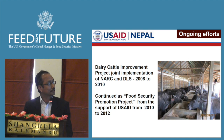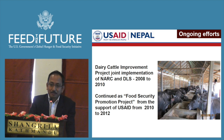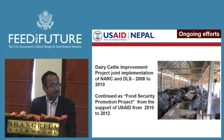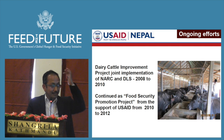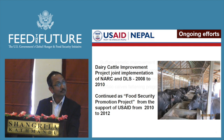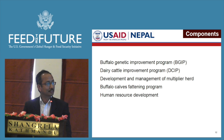What are the ongoing efforts? The DCIP — Dairy Cattle Improvement Program — was originally jointly implemented by Nepal Agricultural Research Council and the Department of Livestock Services from 2008 to 2010, and was later continued by USAID from 2010 to 2012 as part of a food security promotion project. The program components included genetic improvement for buffalo and cattle, and development and management of multiple herds, among other things.